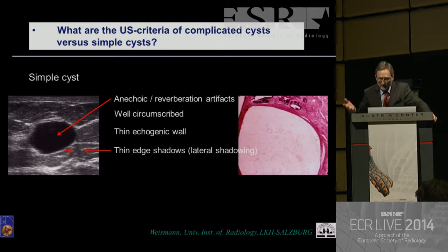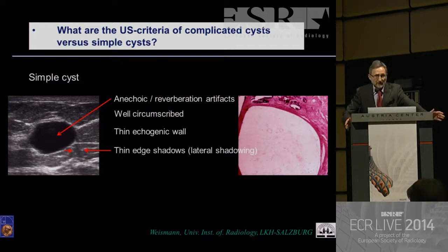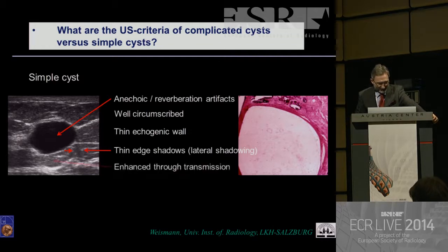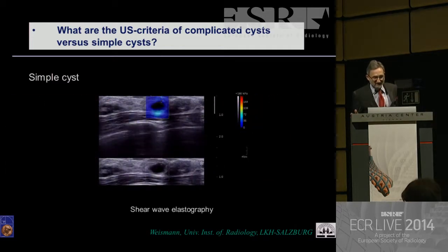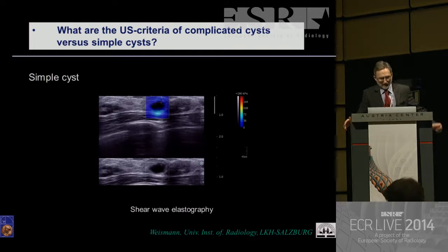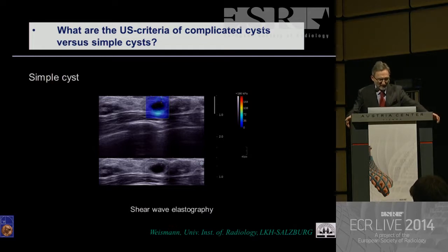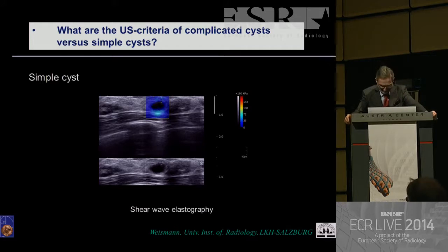If you're working with compound imaging, you can reduce this type of shadowing. If you're not working with this artifact reduction, you will see it more pronounced, and enhanced through transmission. A simple cyst, if you're working with shear wave elastography, you don't see shear wave propagation in the fluid, so it is more or less a black hole in this lesion.